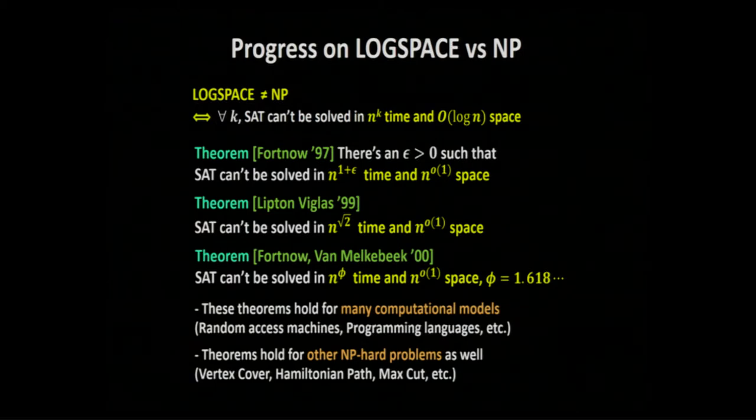What's really nice about these theorems is they hold for many computation models — not just Turing machines, but also random access machines and models of programming languages. They're very robust to the computational model, and yet you still prove some kind of lower bound. Another nice aspect: they hold for other NP-complete problems as well, including TSP, vertex cover, Hamiltonian path, max cut, and so on.